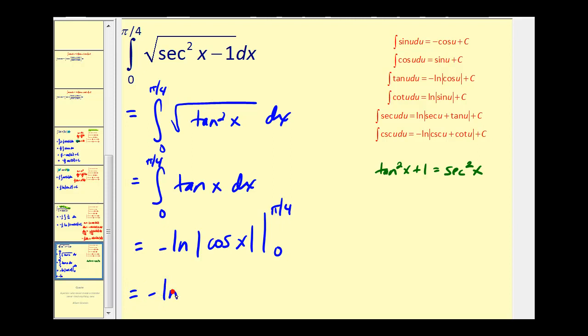Let's go ahead and do that. We'll have negative natural log absolute value of cosine pi over four minus negative natural log absolute value of cosine zero. Well the cosine pi over four is equal to square root two over two. So we'll have negative natural log square root two over two, and this will be plus natural log of cosine zero. But cosine zero is one and natural log one is zero. So this would be our final answer.